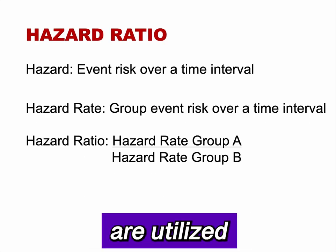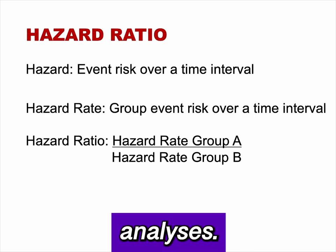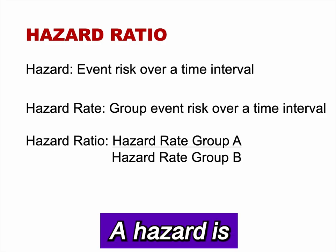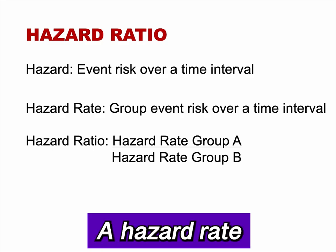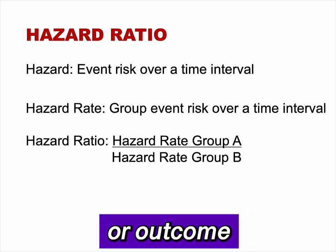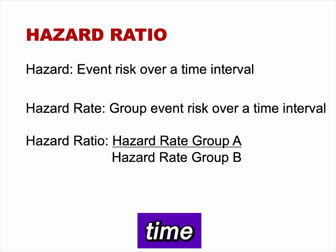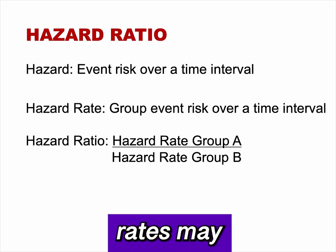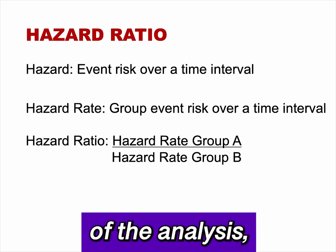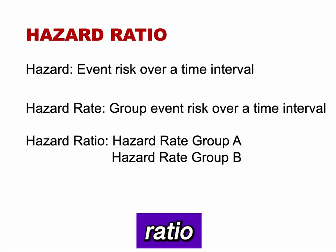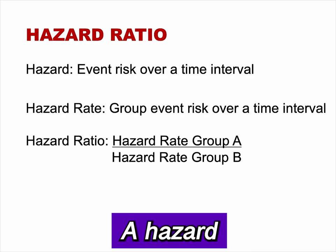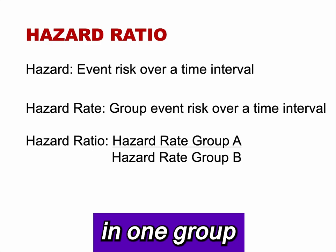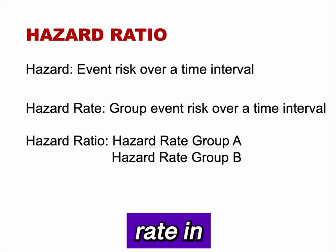Hazard ratios are utilized in time-to-event analyses. A hazard is the risk of an event or outcome over a specified time interval. A hazard rate is the risk of an event or outcome in a group over a specified time interval. The hazard rates may vary over the time of the analysis, but it is assumed that the hazard ratio is constant at any point in time during the study period. A hazard ratio is the hazard rate in one group divided by the hazard rate in another group over a specified time interval.